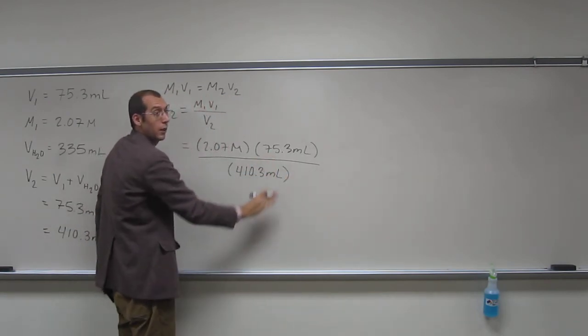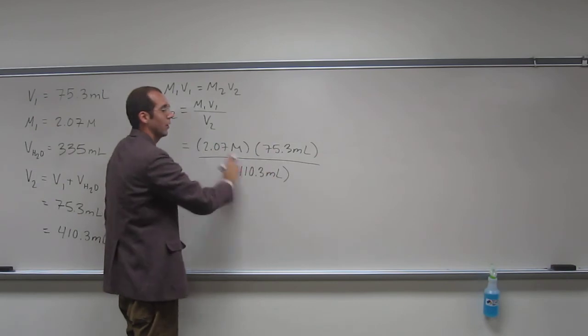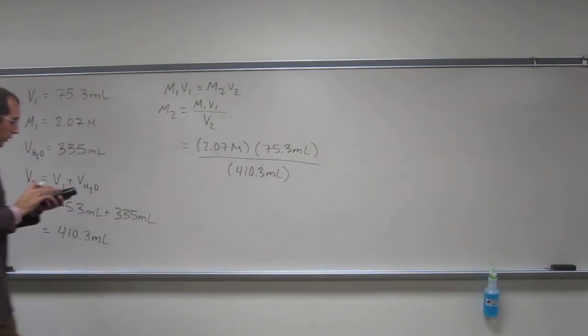That's really to 3 sig figs there. But those two are to 3 sig figs too, so it'll work out. So, 2.07 times 75.3 divided by 410.3.